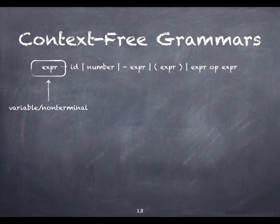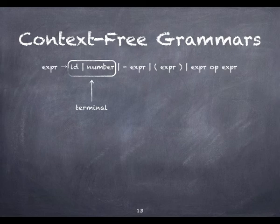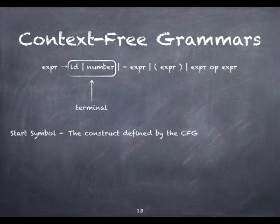Symbols that make up the strings derived from the grammar are known as terminals. They cannot appear on the left-hand side of any production. In a programming language, the terminals of the context-free grammar are the language's tokens. One of the non-terminals — usually the one on the left-hand side of the first production — is called the start symbol. It names the construct defined by the overall grammar.